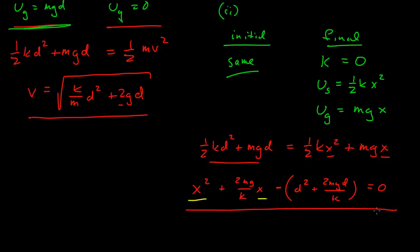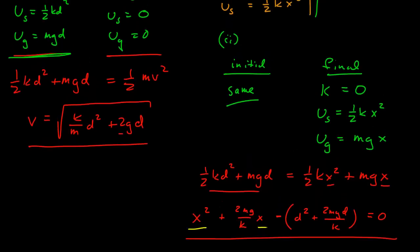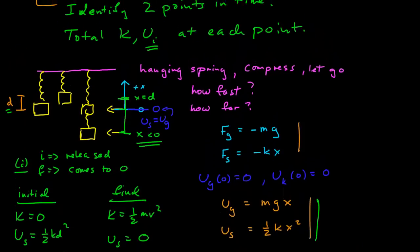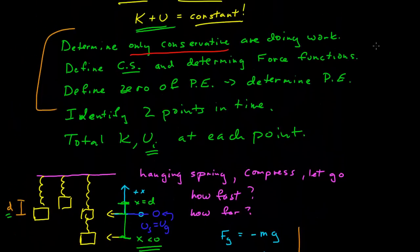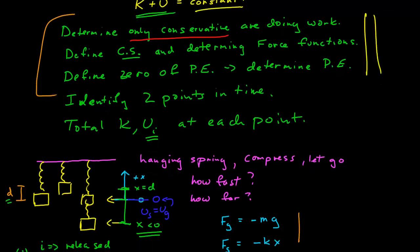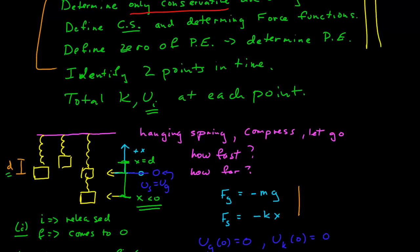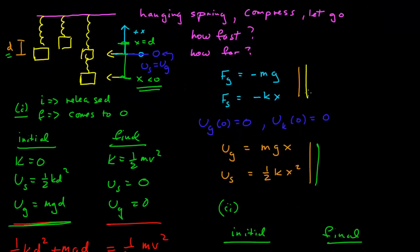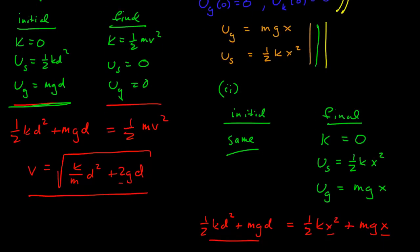There's a trick to the hanging spring problem which we'll talk about later, but at the moment we're practicing conservation of energy. As long as we follow our procedure carefully, it's straightforward: make sure only conservative forces are doing work, define the coordinate system, find the force functions, define the zeros of potential energy to get the potential energy functions, choose two points in time, and set all initial energies equal to final energies — the kinetic and potential energies we call mechanical energy.